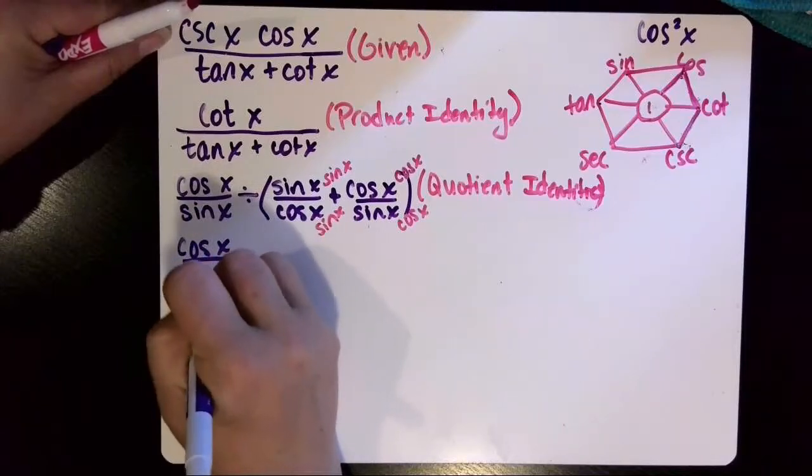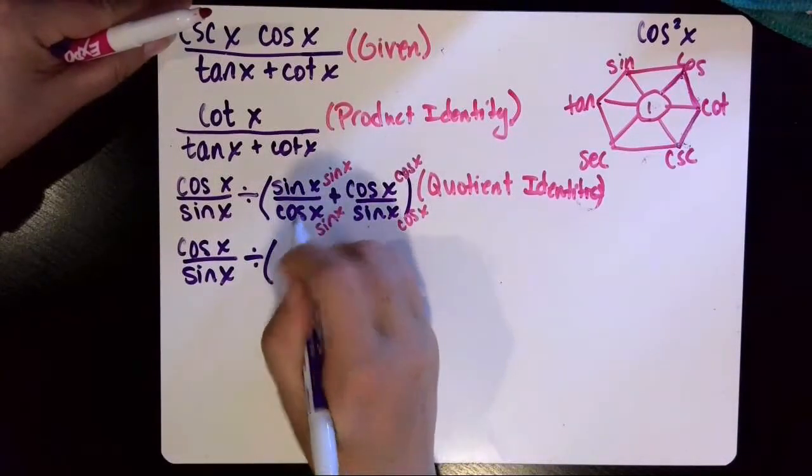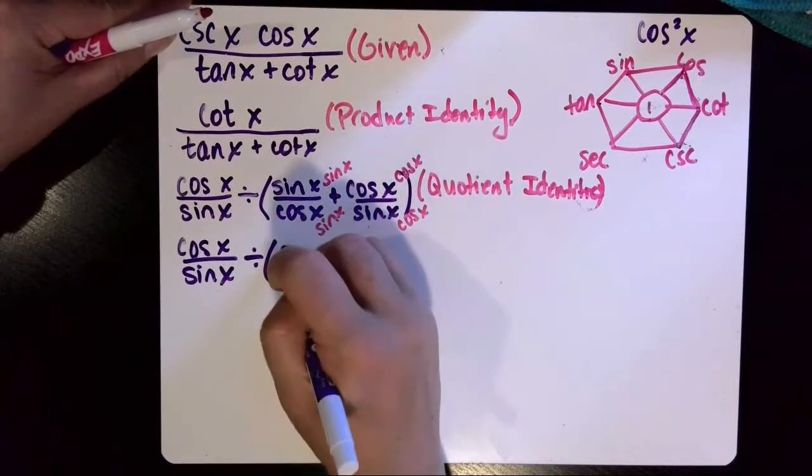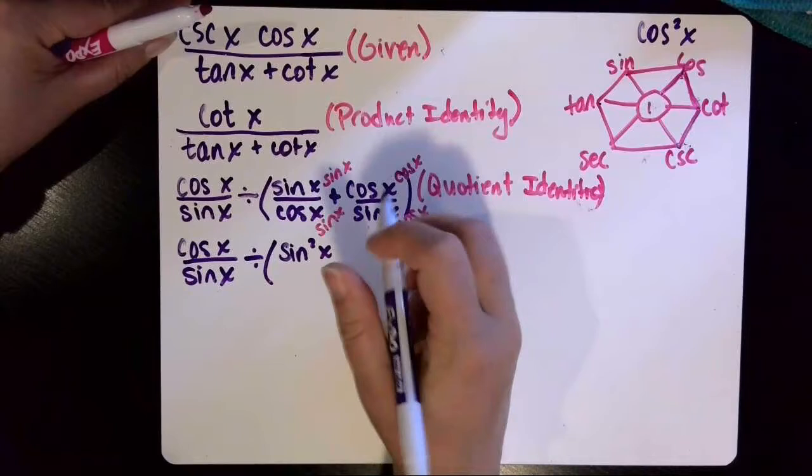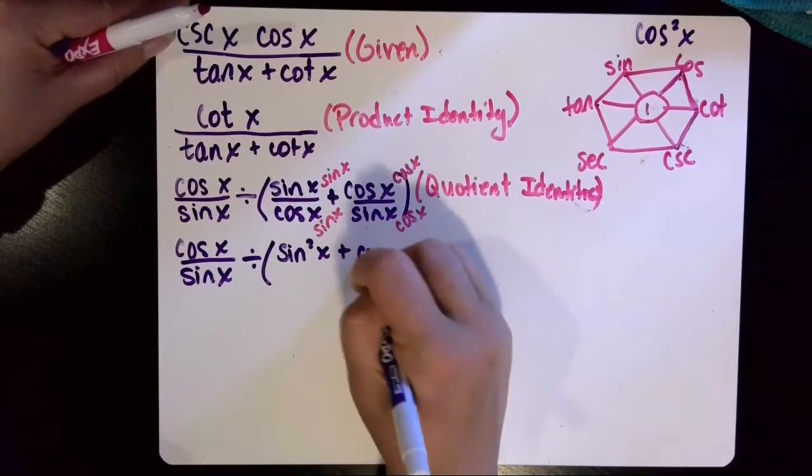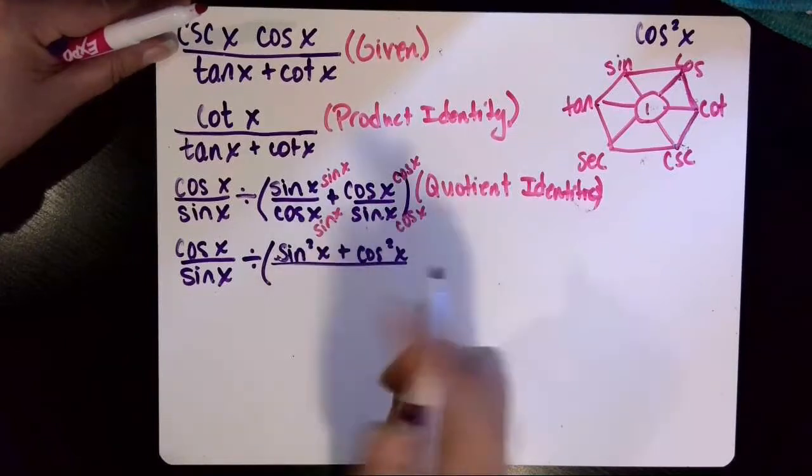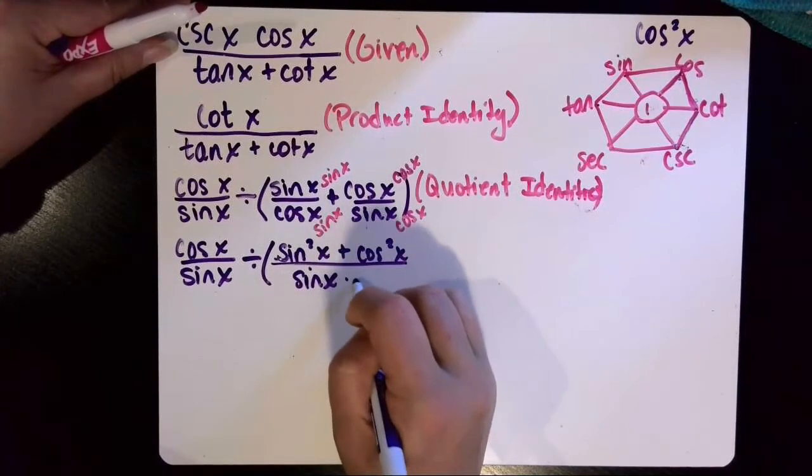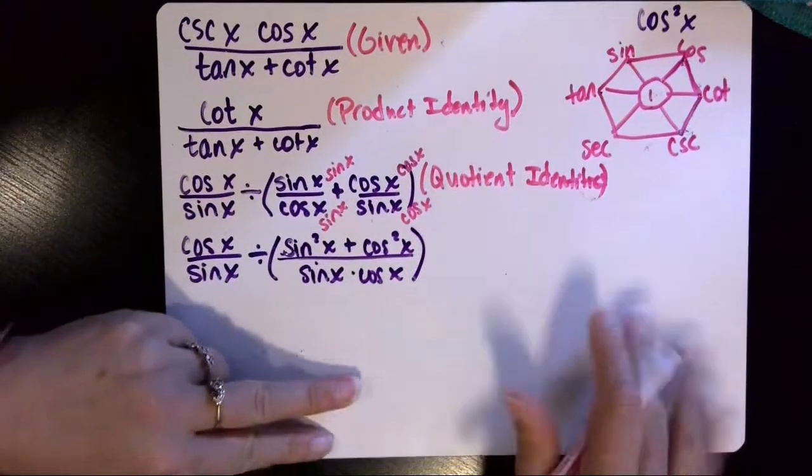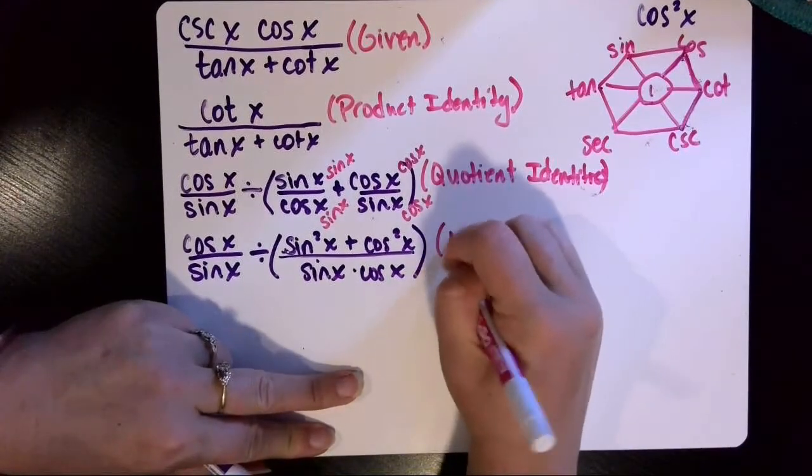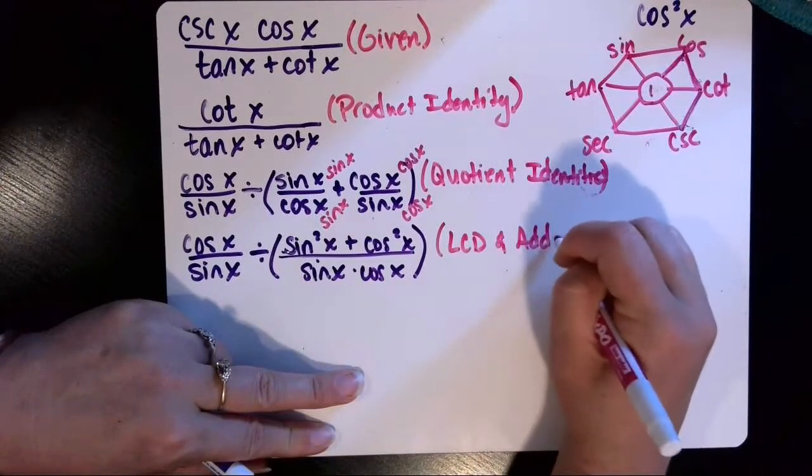So, cosine of x divided by sine of x, and then that's divided by this quantity: sine of x times sine of x is sine squared x. Then, cosine of x times cosine of x, that's cosine squared x. And that'll all be over my new common denominator, sine x times cosine x. Okay, and that's step four. We found an LCD, least common denominator, and we added the fractions.